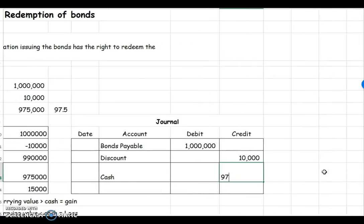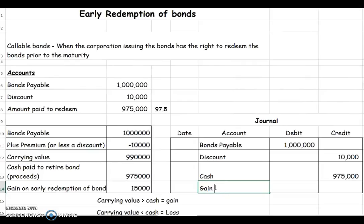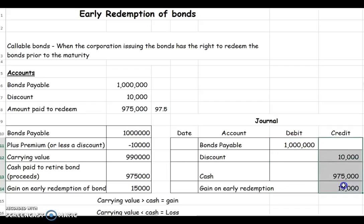Then the gain that we calculated, we're going to call that a gain on early redemption of the bond, and that was $15,000. We're going to make sure that we're in balance — total debits equal one million and total credits also equal one million — so the journal entry is in balance.